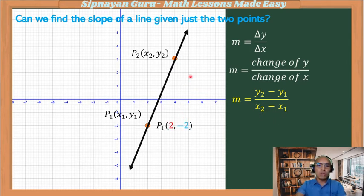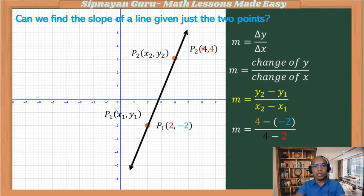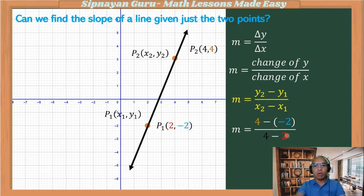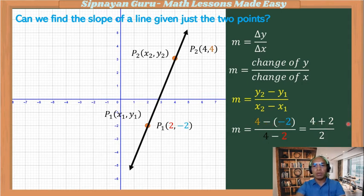Suppose we have point one (2, −2) and point two (4, 4) and we are asked to find the slope. x₂ = 4, y₂ = 4, x₁ = 2, y₁ = −2. Applying the formula: (y₂ − y₁) over (x₂ − x₁) = (4 − (−2)) over (4 − 2). Negative times negative is positive, so 4 + 2 = 6, and 6 divided by 2 = 3. The slope of this line is 3.